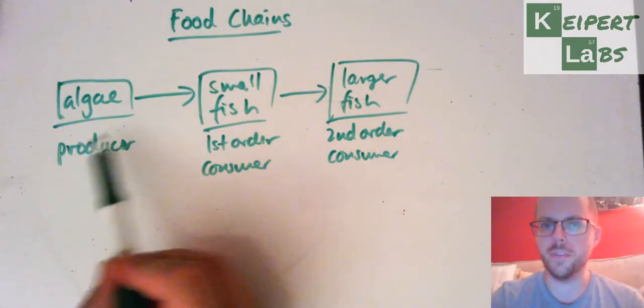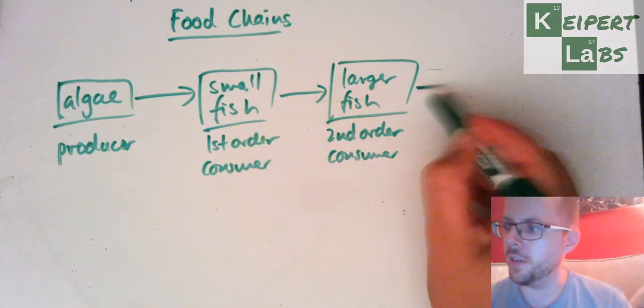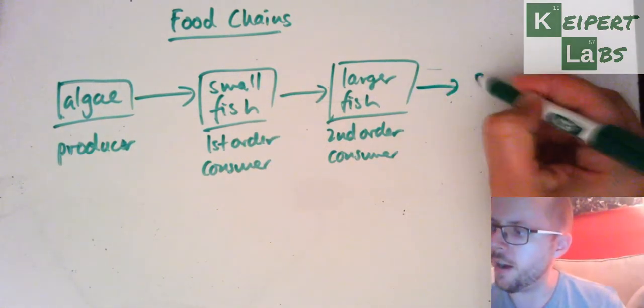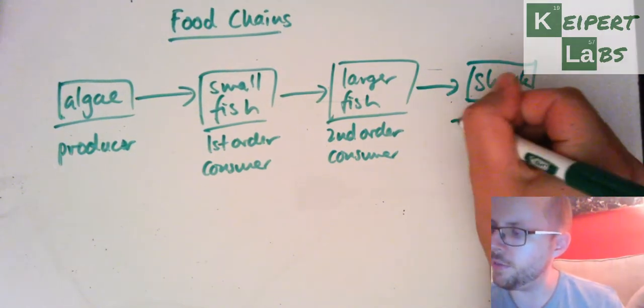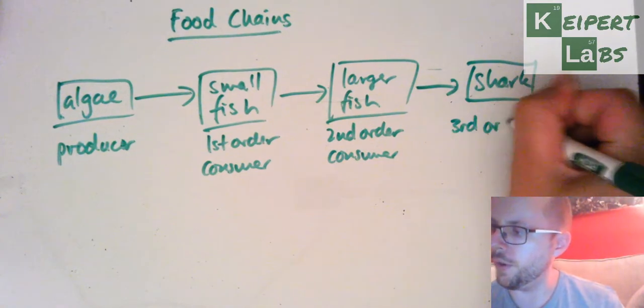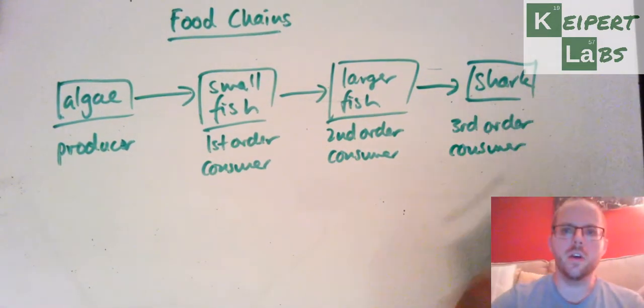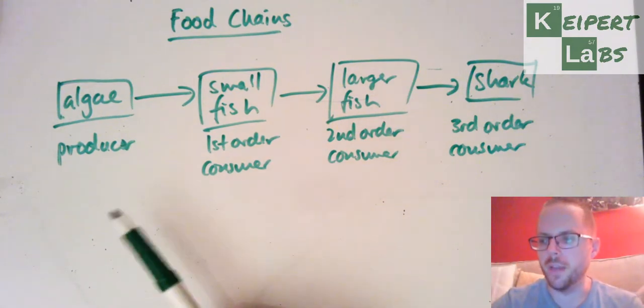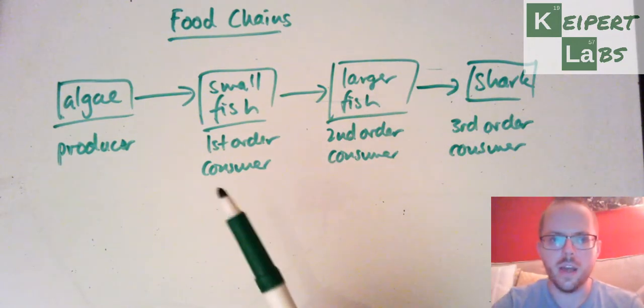So the algae is eaten by the small fish, which is eaten by the larger fish, and let's take this one to the next level. Let's say a shark. This would be a third order consumer. Because all of that energy is flowing up through, so first level, second level, third level.